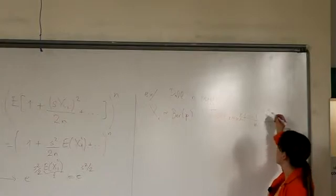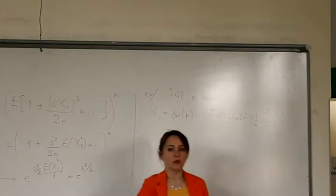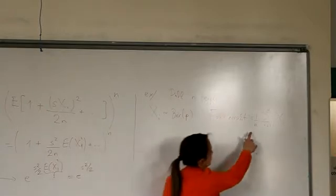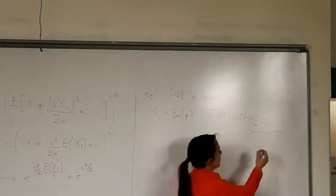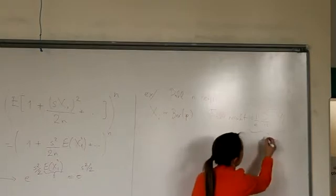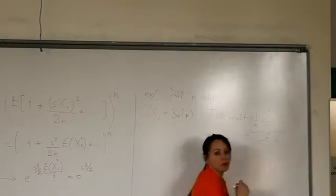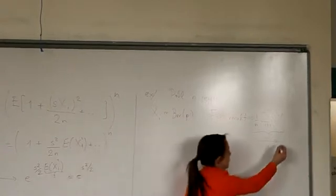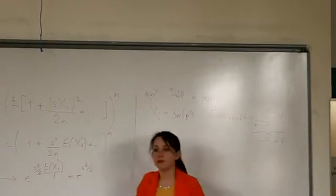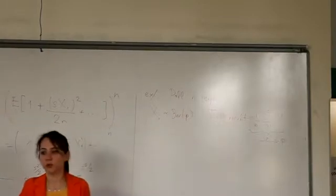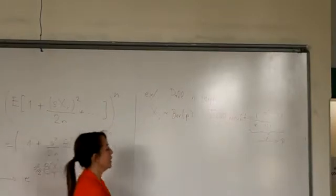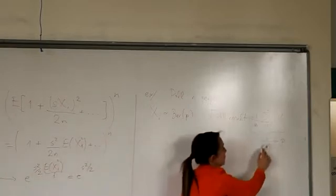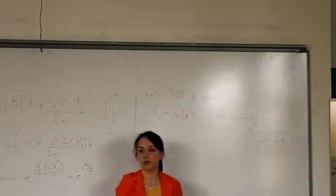We know that as n increases, the poll result will converge in probability to the expectation of Xi, which is p. So eventually if we interview a very large group of people, our estimate will converge to the true mean, which is good.